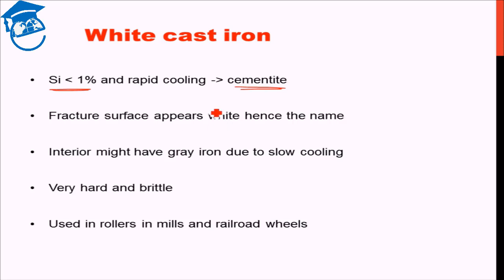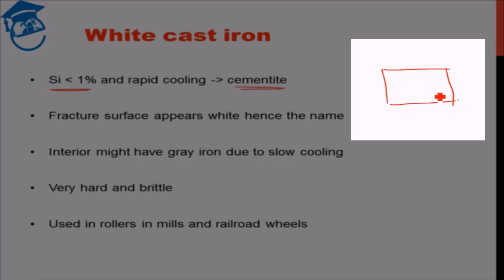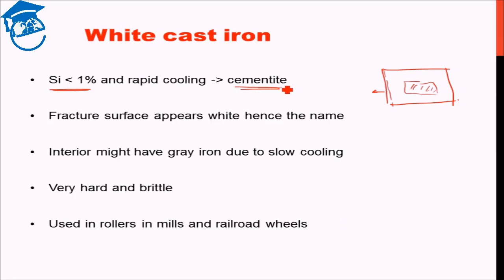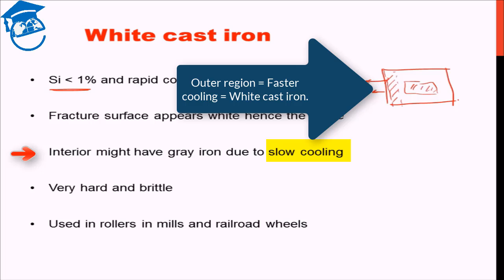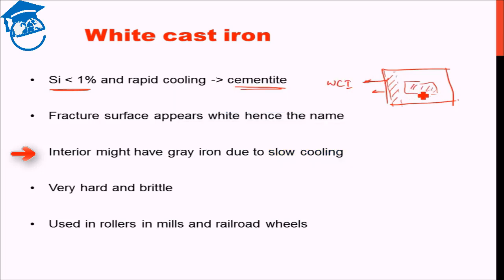Now if you have a really big chunk of material, the cooling rate might not be the same throughout. The outer surface may cool really rapidly while the inner core may take a larger amount of time to cool. Since cementite formation in white cast iron depends on rapid cooling, it can happen that the outer surface cools rapidly enough to form cementite whereas the inner surface does not. This results in white cast iron in the outer region, and in the inner region where cooling is slow enough, gray cast iron can be formed — so there can be segregation of microstructure in bulky material.